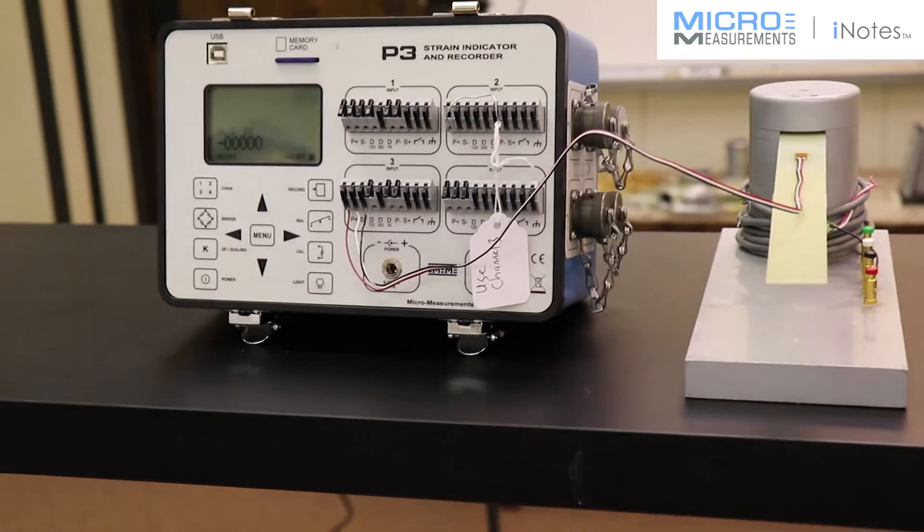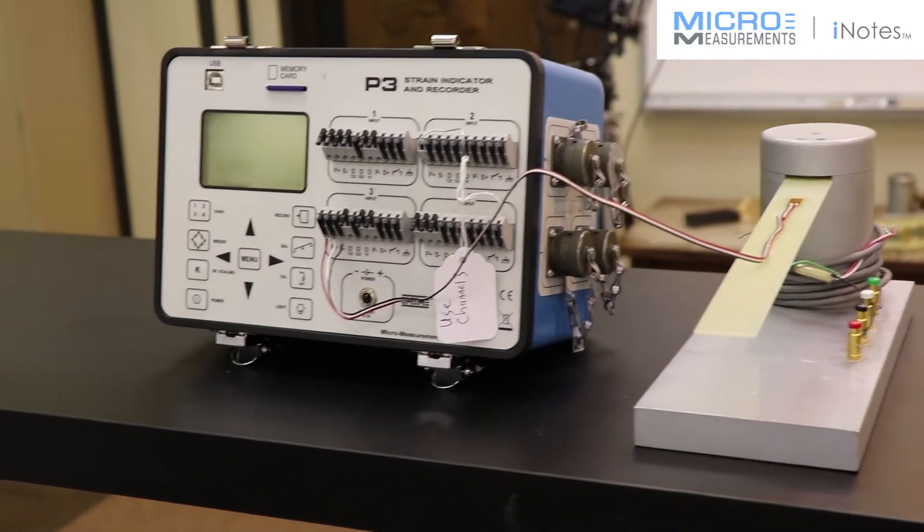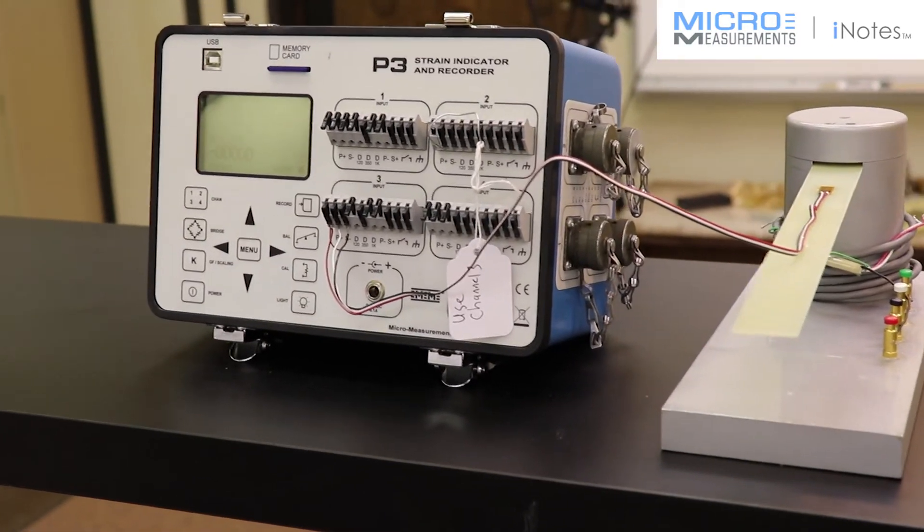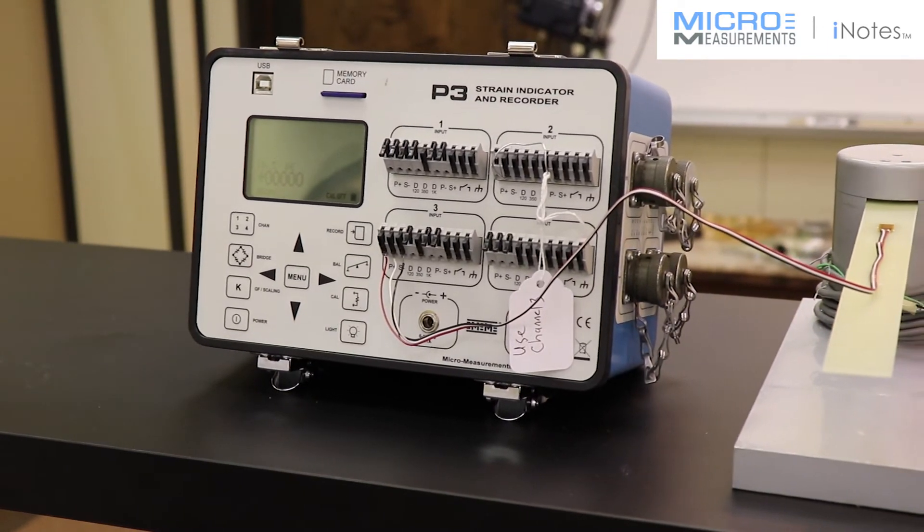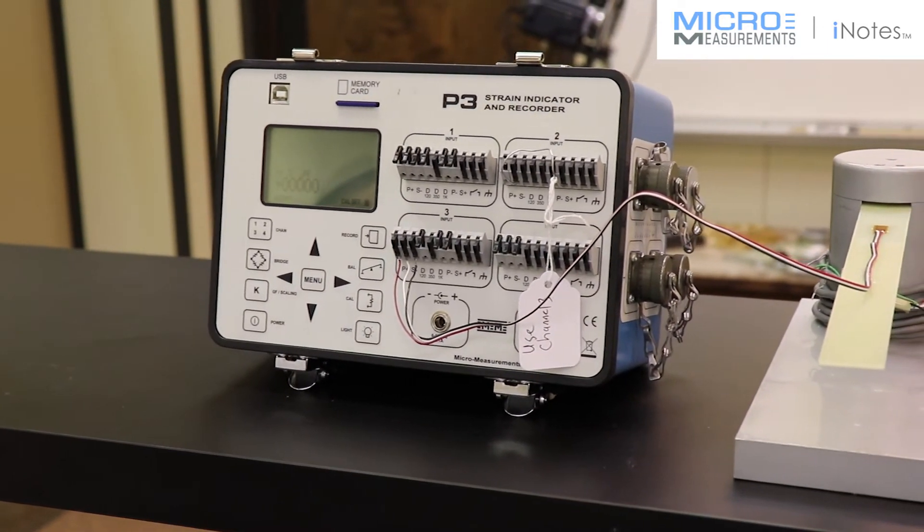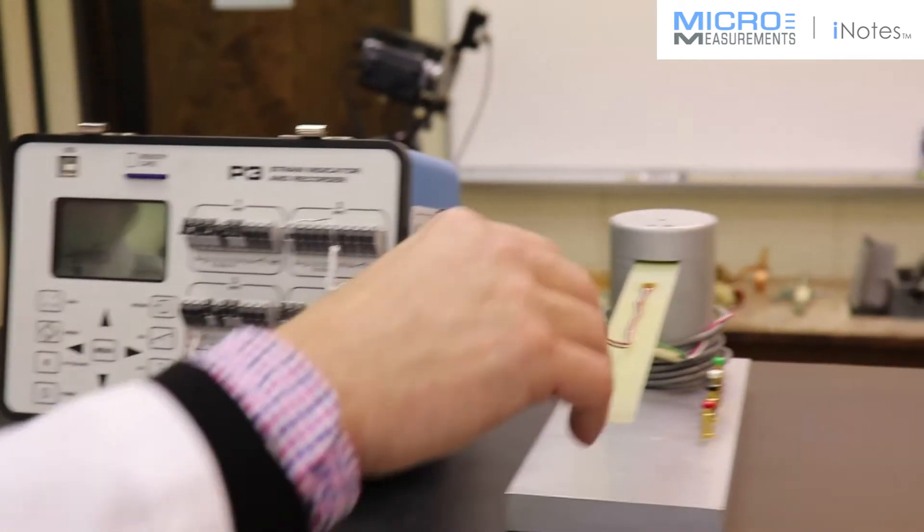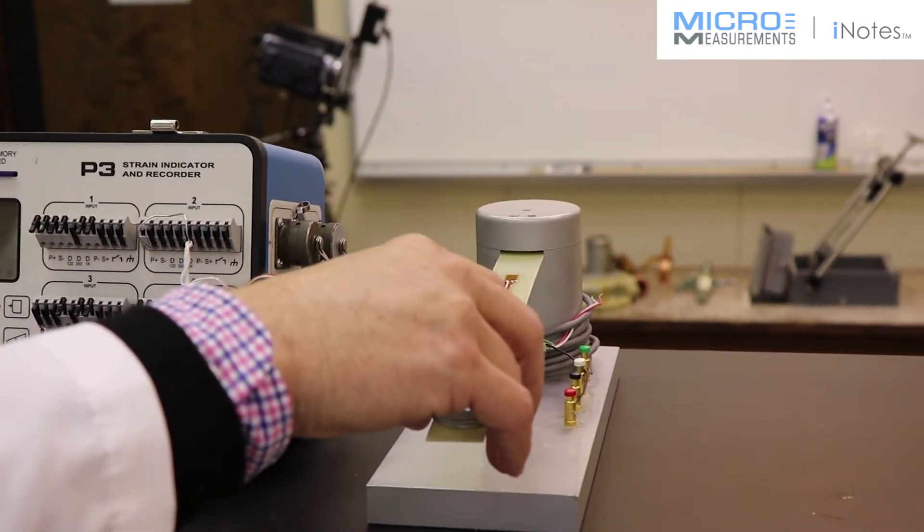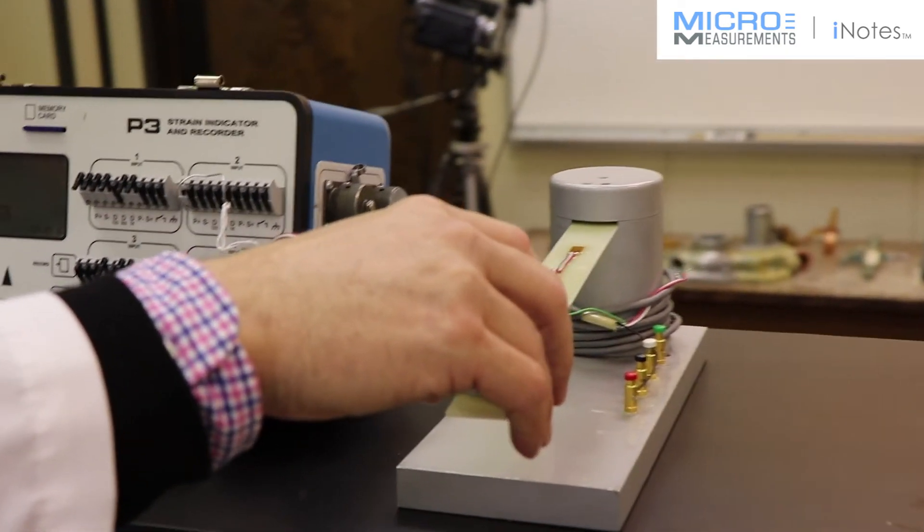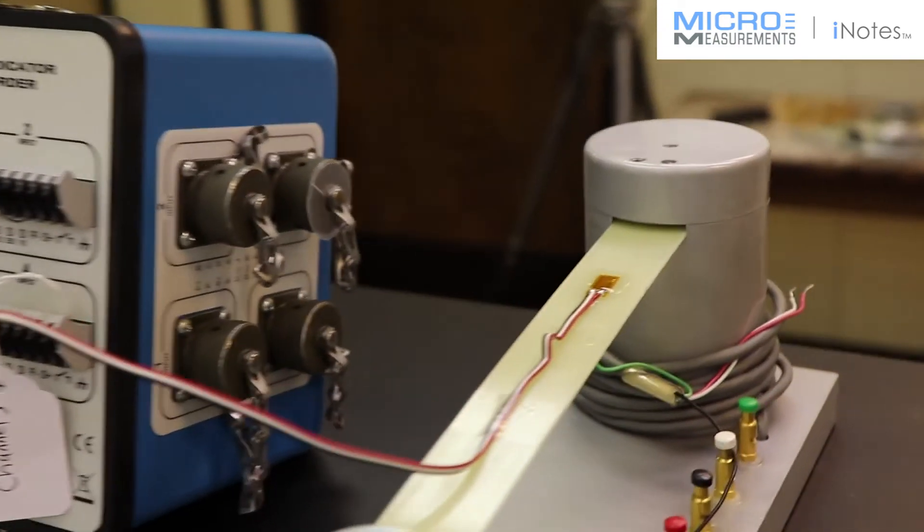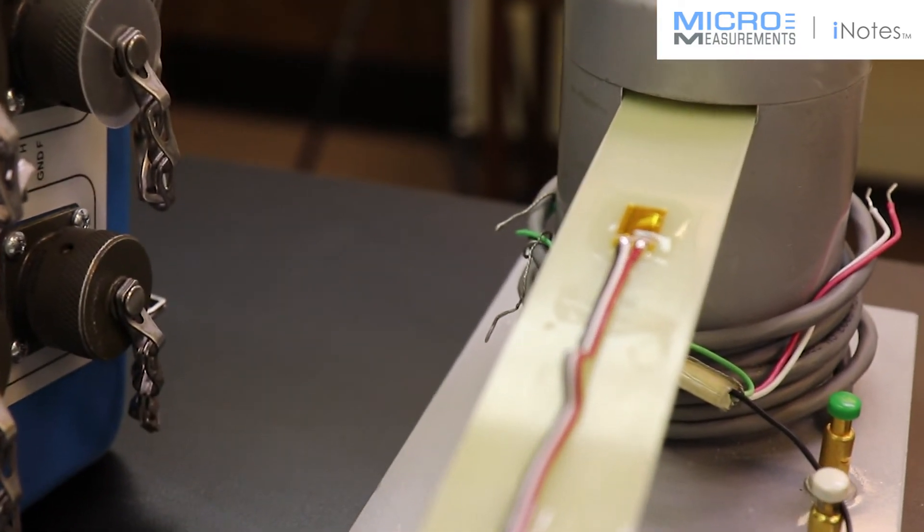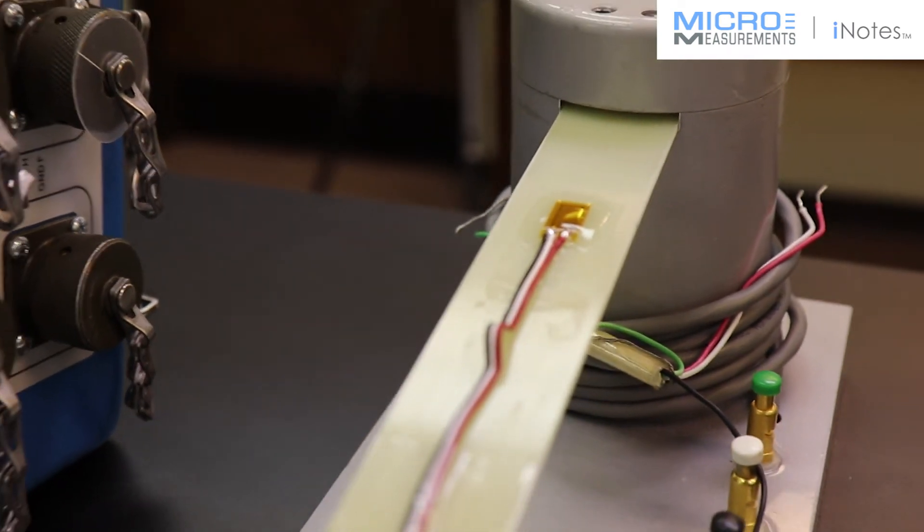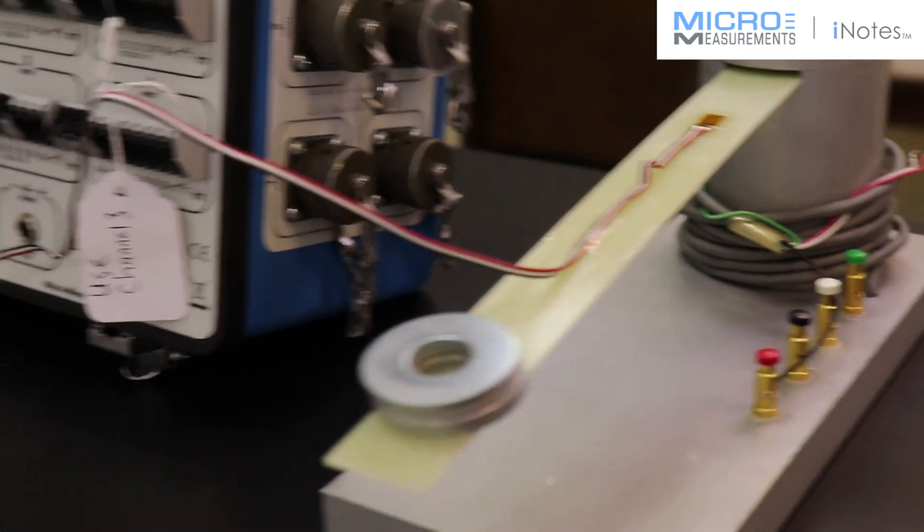So that's it. A CEA series strain gauge installed with M-Bond 200 on a piece of G10, which is similar to materials used for printed circuit boards. We've just checked its properties using four little washers. Really, the stability is quite good. Nicely done.